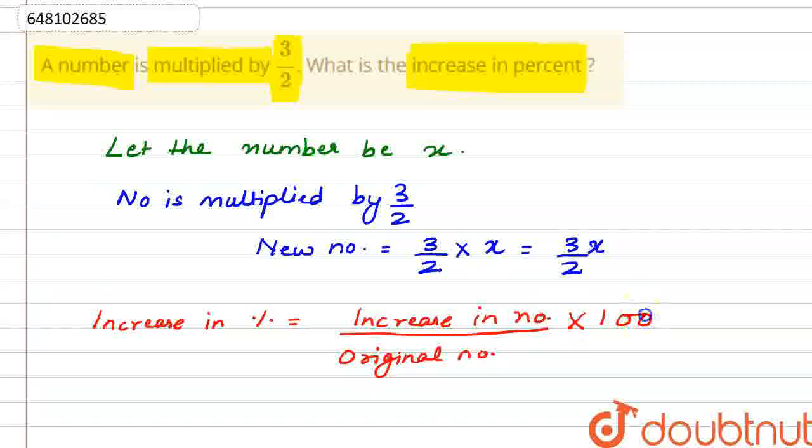Multiplied by 100. So using this formula, increase in number equals new number minus original number. So this will be 3x/2 minus x divided by original number x.